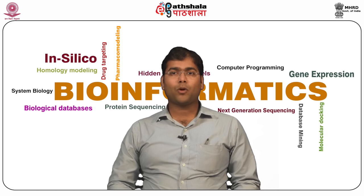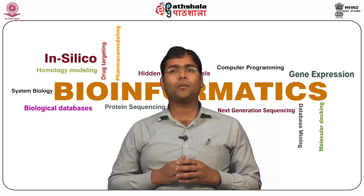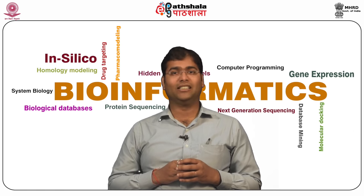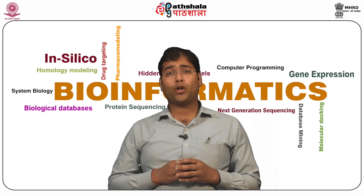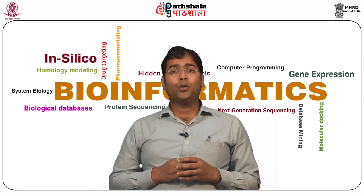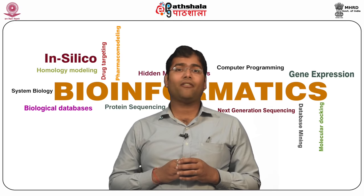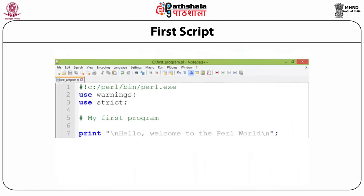Before starting our first program, we need to know a few important points about Perl. We need a text editor to write the program — for example, Notepad, Notepad++, gedit, etc. In this module, we will be using Notepad++. In Perl, the file extension used for scripting is .pl. We need to write our program in the text editor and save it with the .pl extension. Now we will write our first program. To avoid confusion, we will create a folder on the desktop dedicated to Perl scripts and keep all related files in it.